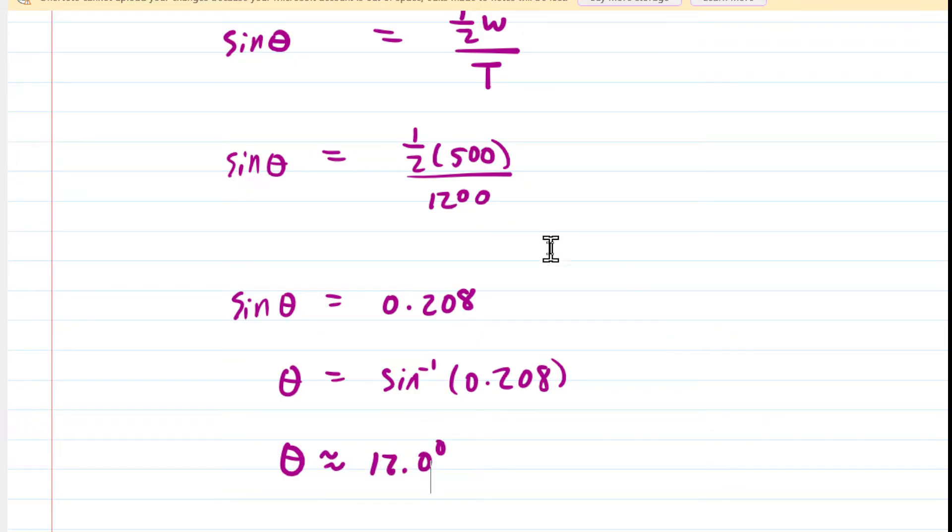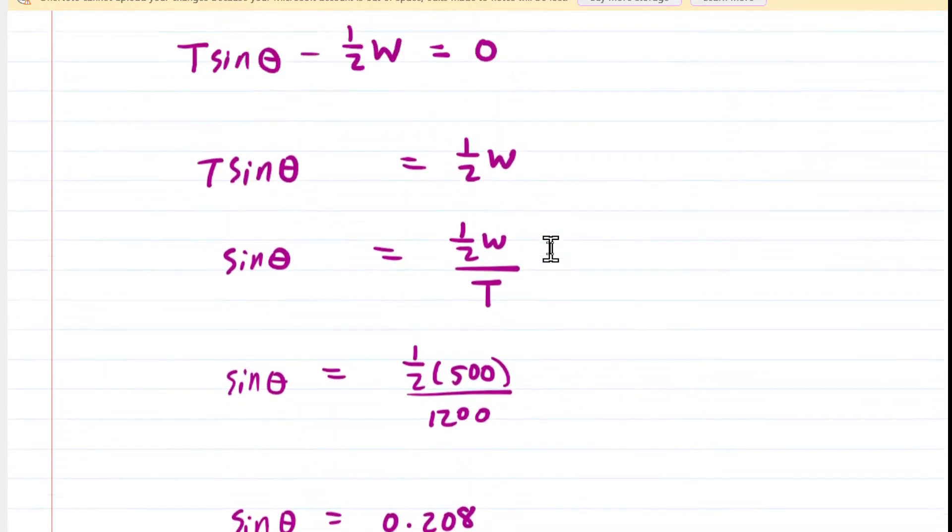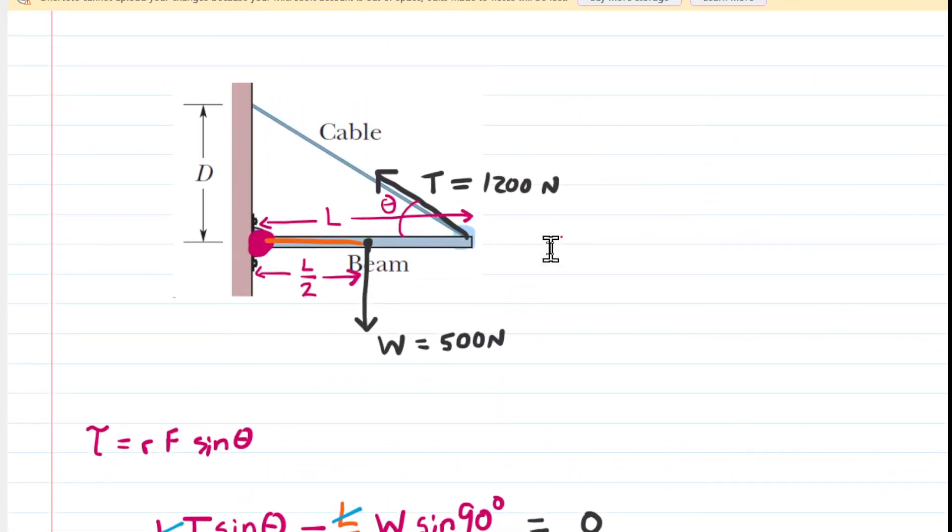Now we still haven't solved for d, but now we can because we have that angle theta. If we go back to our picture, we can see that we have ourselves a right triangle. So we'll just redraw it on the side for clarity. This is d, we know this is L, and then we just figured out that angle theta.